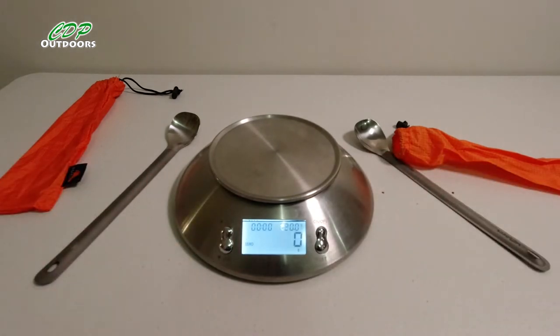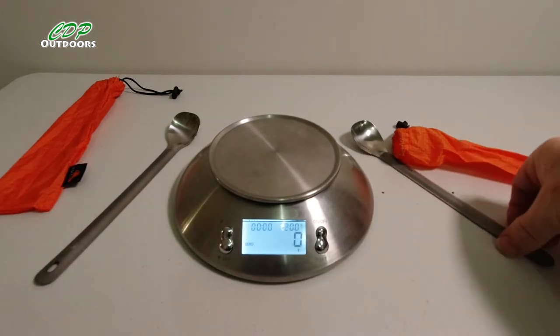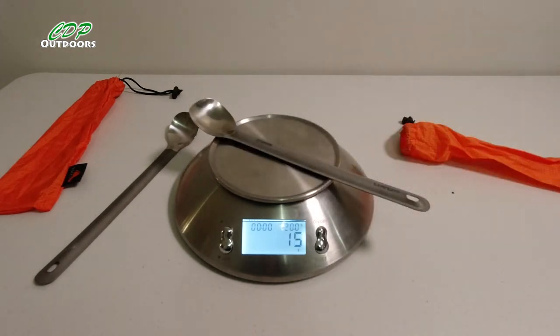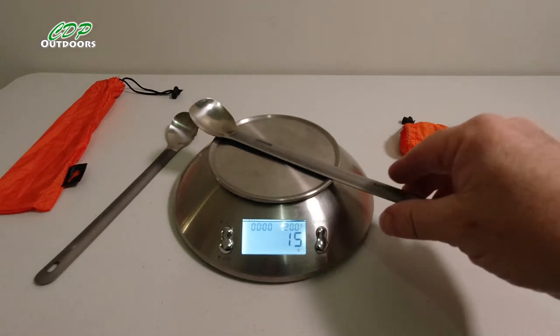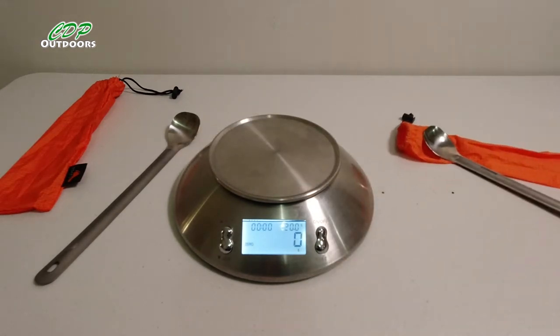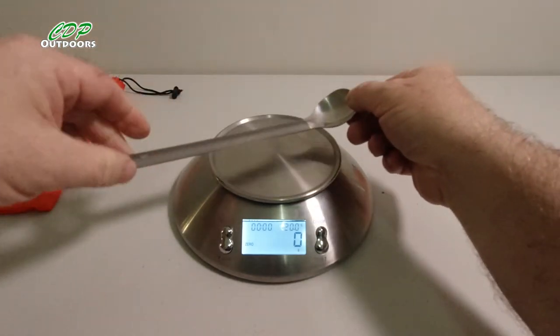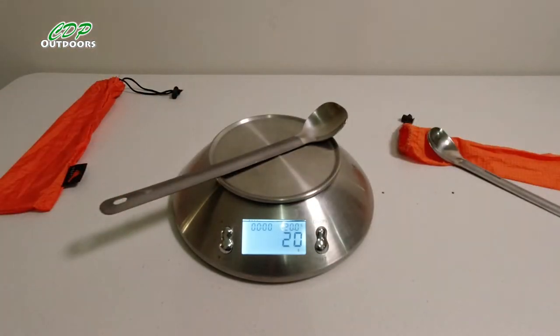I'm going to weigh these in grams. The Lixada spoon on its own comes in at 15 grams. Here's another way of telling that they're not exactly the same with a different name put on, because the Tokes titanium one comes in at 20 grams.